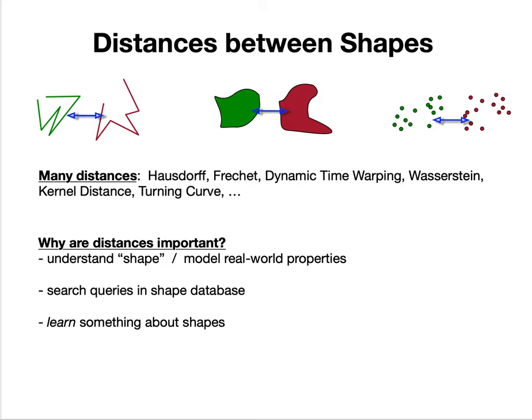You might also want to learn something from the shapes. If you have a huge number of shapes and label some as good or bad, or related to life or death, you want to use those labeled ones to predict properties of new unlabeled ones. This is machine learning. How can we do machine learning on shapes?